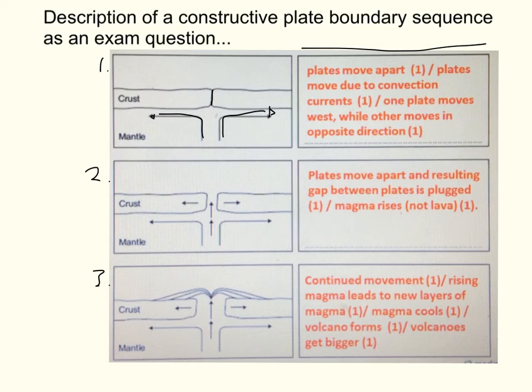In diagram two, you can see that a gap has opened up between the two plates. So the plates must have moved apart, making a gap. That gap is then plugged or the arrow shows that magma is rising. Make sure it's magma, not lava. Remember, lava is only on the surface, magma is inside the earth.